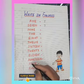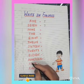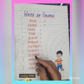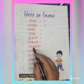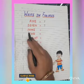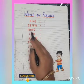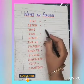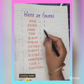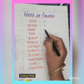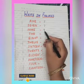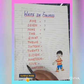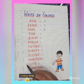Now let's find out the next number name. N, I, N, E — 9. So we will write here 9. Okay, clear?